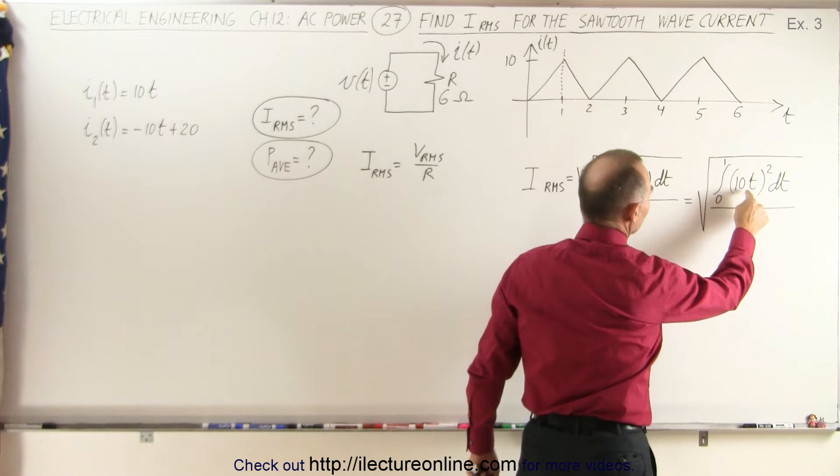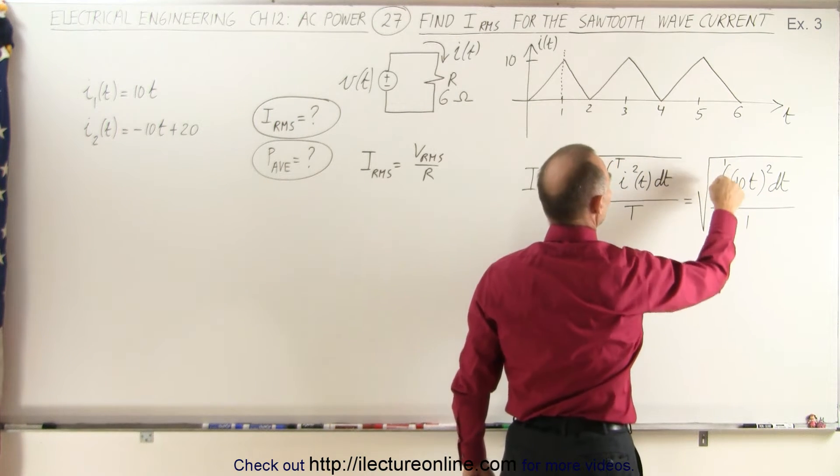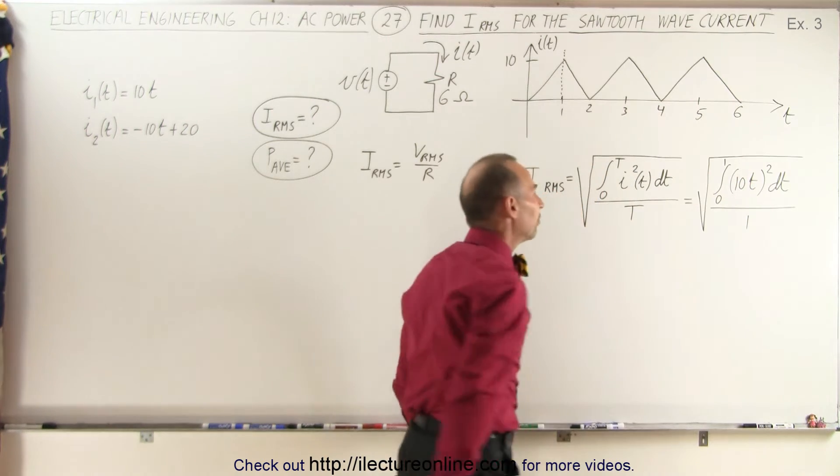The function becomes 10T. We're going to square that, times dT, divided by the period, integrated from zero to one underneath the radical.